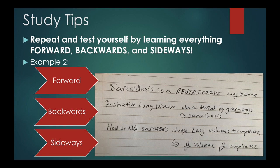How does sarcoidosis affect lung volumes? How does it affect lung compliance? Because it's restrictive, it's going to decrease both. That's what learning it sideways will do — you've gone from an orthopedic-type question to reviewing something from pulmonary. You've gotten an extra repetition remembering that restrictive lung disease decreases lung volumes and decreases compliance.